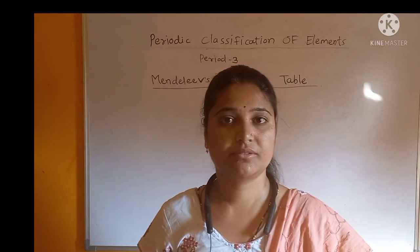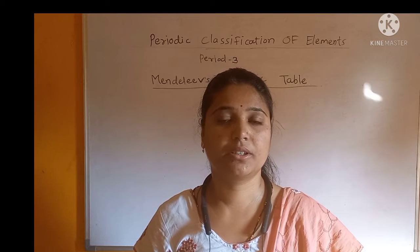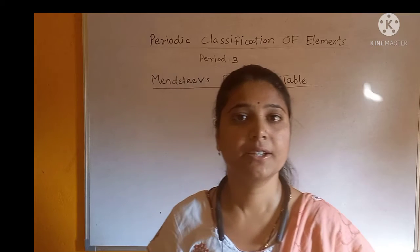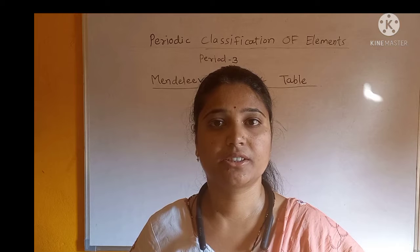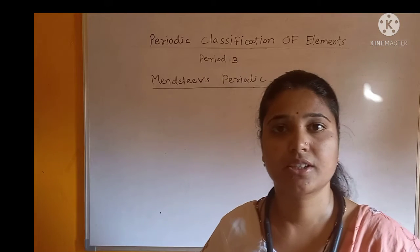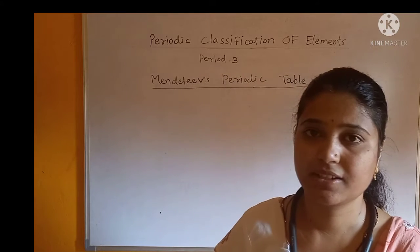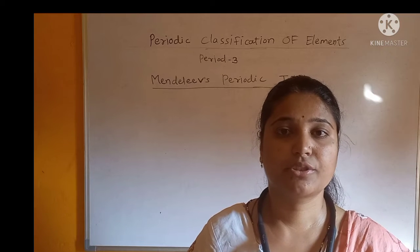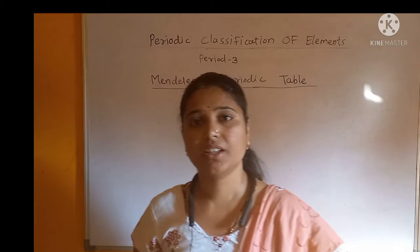Regarding Mendeleev's periodic table, the property of an element are related to their atomic mass number. Similarly, Mendeleev also gave one statement: the properties of an element are the periodic functions of their atomic mass number. So in this theory also, the property of an element depends upon the atomic mass number.